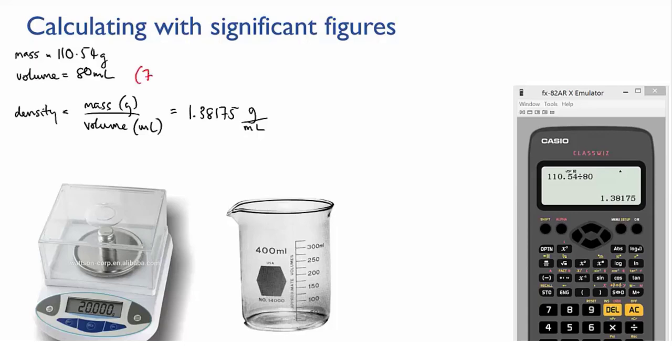The true volume of the sample could be anywhere between 75 and 84 mils, and that means that the true value of the density could be anywhere between, and you can calculate this for yourself, 1.32 or 1.47.